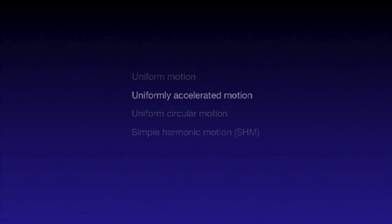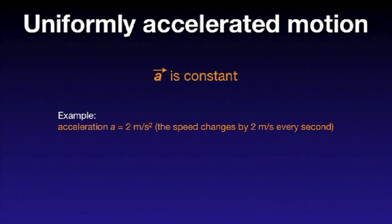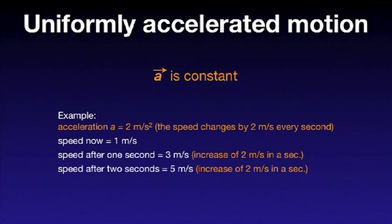The next example is uniformly accelerated motion. The main feature of this type of motion is that the velocity changes at a constant rate — in other words, the acceleration is constant, referring to both the magnitude and the direction of the acceleration vector. For example, if an object moves along a straight line and accelerates at a constant rate of 2 meters per second squared, that means the speed increases by 2 meters per second every second. So if the speed is now 1 meter per second, it is 3 meters per second one second later, and 5 meters per second one second after that.